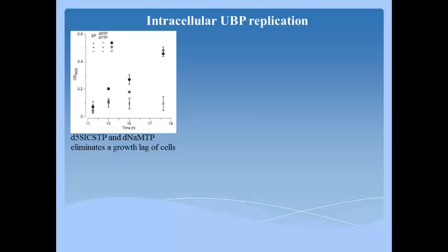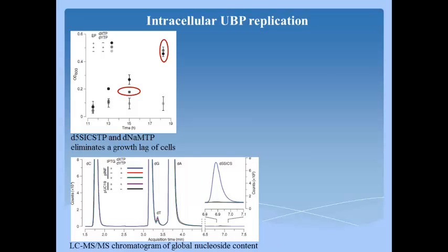Cell growth was monitored via culture turbidity. As shown in this figure, growth was significantly slower in the presence of IPTG. But addition of unnatural base pairs resulted in only a slight further decrease in growth initially, and the lag was eliminated at the later stage, about 18 hours of cell growth. To determine the level of unnatural base pair retention, the plasmid was recovered, digested and dephosphorylated to single nucleosides and analyzed by LC-MS.